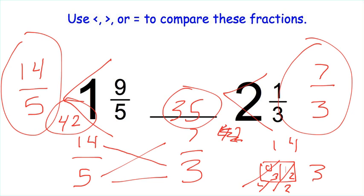So 42 is larger than 35, which tells us 14 fifths is larger than 7 thirds. And then I'll just transfer my inequality up here. So 1 and 9 fifths is larger than 2 and 1 third.